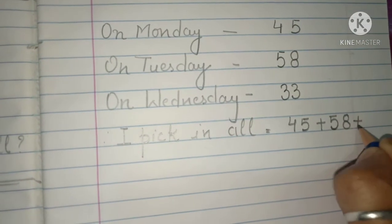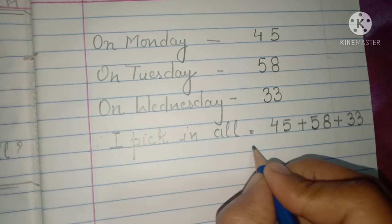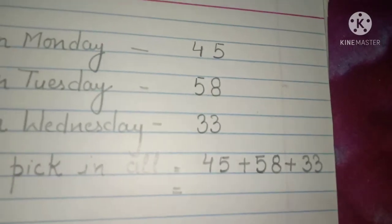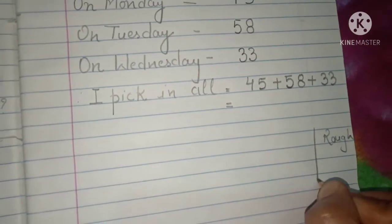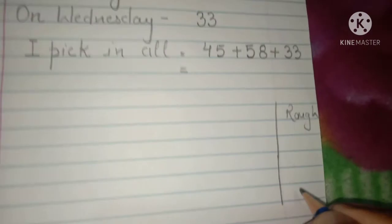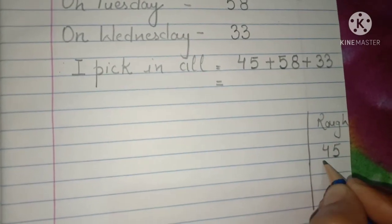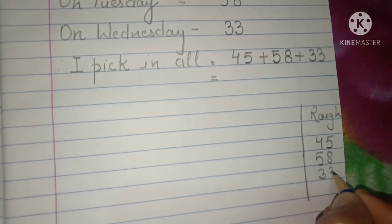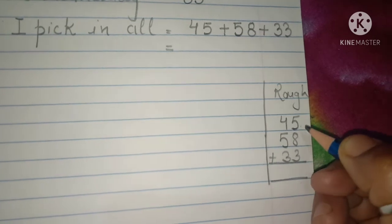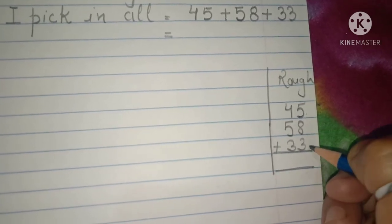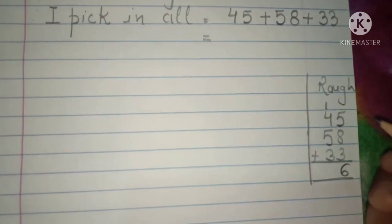So how many brinjal did I pick in all? I pick in all: 45 plus 58 plus 33. Now you have to add these three digits. 5 plus 8 — how much? 13. And 13 plus 3 you will get 16. Carry over 1. Then 1 plus 4 is 5, and 5 plus 5 is 10, and 10 plus 3 is 13.